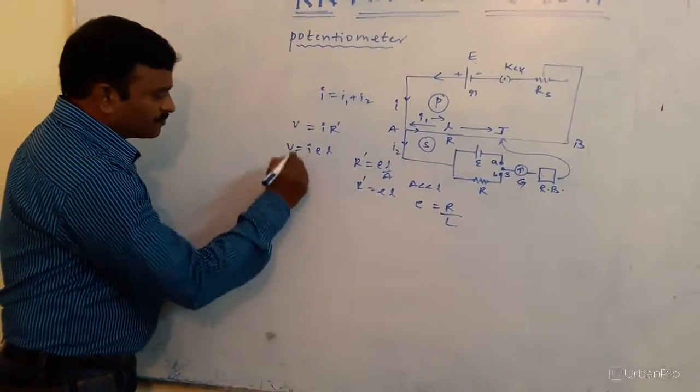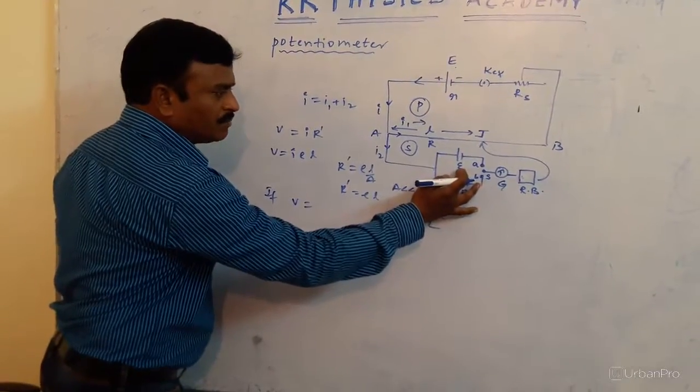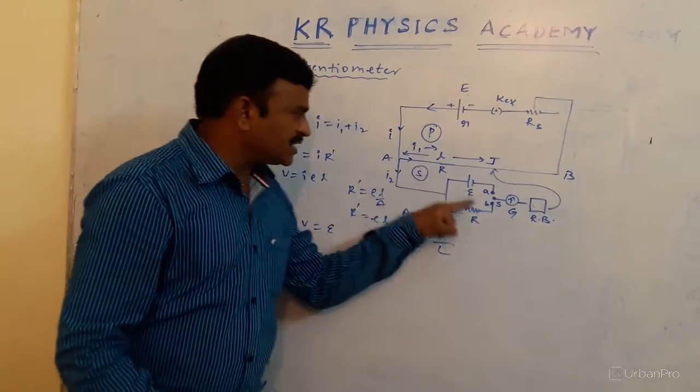Now, if V, potential drop across the wire, is equal to EMF of the cell, then the current doesn't flow through the secondary circuit. Current only flows through the primary circuit.